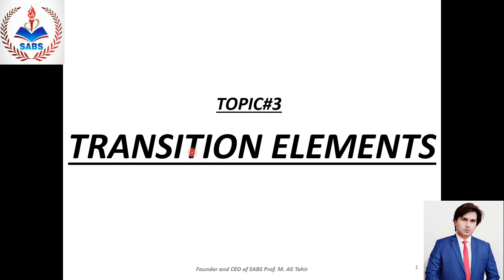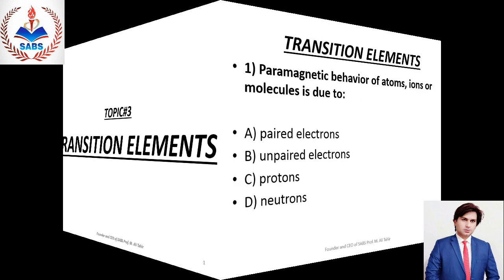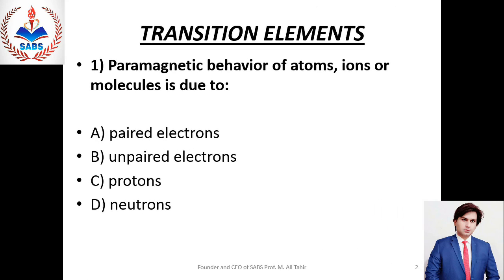Transition Elements. Question No. 1: Paramagnetic behaviour of atoms, ions, or molecules is due to unpaired electrons. ایسے atoms، ions یا molecules جن کے پاس unpaired electrons ہوتے ہیں وہ paramagnetic behaviour show کرتے ہیں اور جن کے پاس unpaired electrons نہیں ہوتے وہ diamagnetic behaviour show کرتے ہیں۔ کسی species کے پاس جتنے زیادہ unpaired electrons ہوتے ہیں وہ اتنا ہی زیادہ paramagnetic behaviour show کرتی ہے۔ Right option is unpaired electrons, Beta.